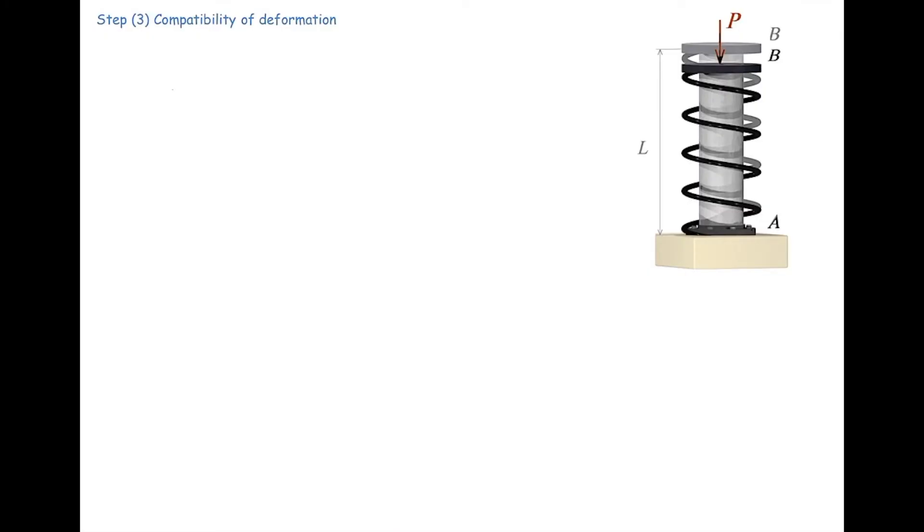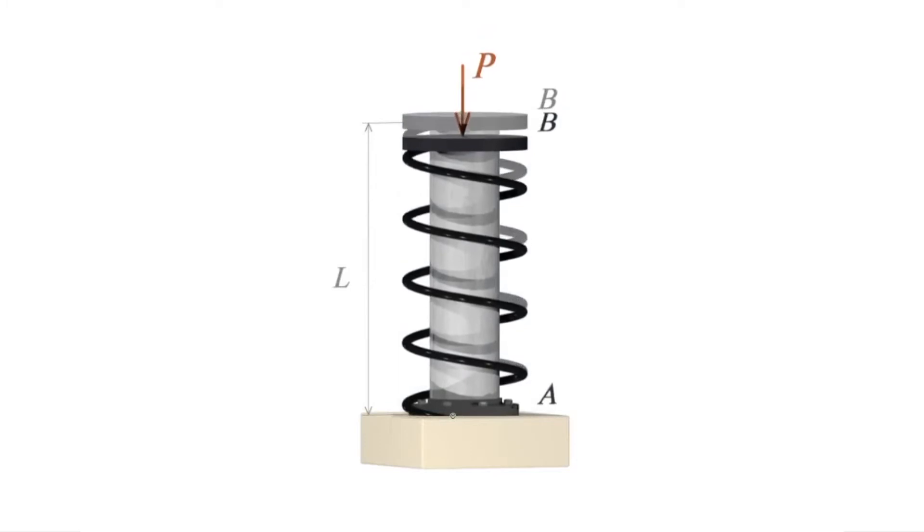Now we get to the third part, which is finding the compatibility of deformation. This is the main part of this problem. In order to find a relationship between the deformations, we need to figure out how the deformation is happening in this structure.